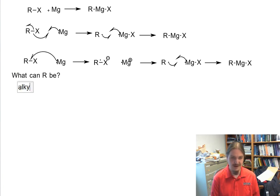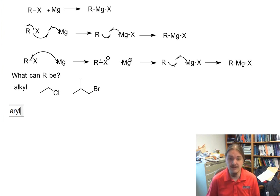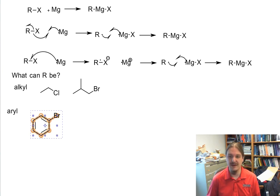R can be alkyl, like ethyl chloride or butyl bromide. R can be aryl, which means it can be an aromatic ring, so you can have like bromobenzene or other aromatic systems.